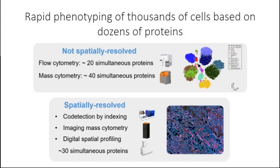More recently, there have been new technologies for cytometry that are spatially resolved. These technologies allow you to simultaneously profile a panel of antibodies targeting multiple proteins in a tissue section with single-cell resolution. Co-detection by indexing (CODEX), developed by Akoya, is one example. There are others like imaging mass cytometry, digital spatial profiling, and so on. These technologies allow you to profile around 30 simultaneous proteins from a tissue section, opening new avenues in the study of tissue architecture.